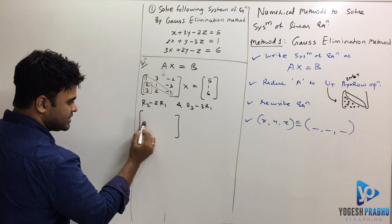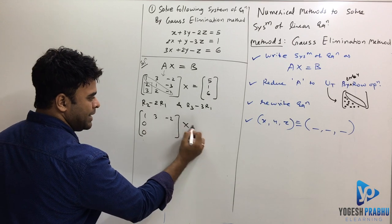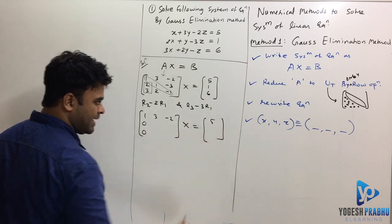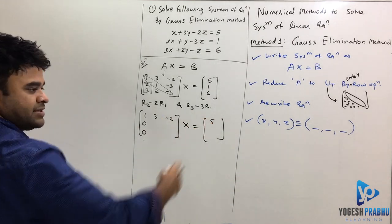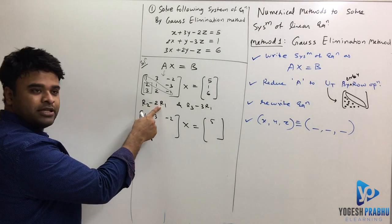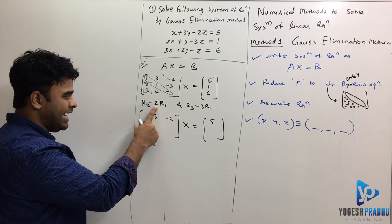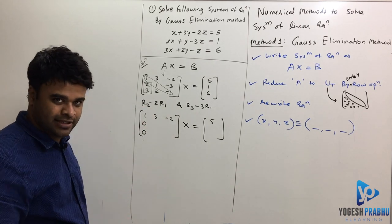So now after this operation, I am surely going to get these two 0s. This 1, 3, minus 2 will remain as it is. This 5 will also remain as it is, but now these two rows will change. Let's really quickly do that. If I want to do R2 minus 2R1, you know my method. I multiply R1 by minus 2 and then I will add to R2. That becomes much easier.